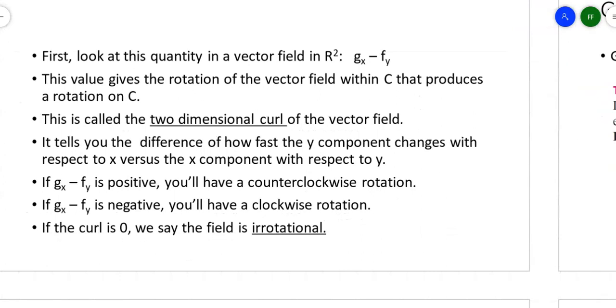We're going to look at this as a quantity in R2, this GX minus FY. It's going to tell us the two-dimensional curl of the vector field. If that number is positive, you've got a counterclockwise rotation. If it's negative, you've got a clockwise rotation. And if the curl is zero, you don't have any rotation. We call it irrotational.